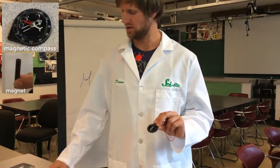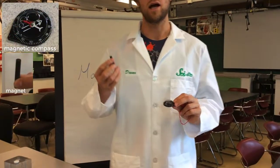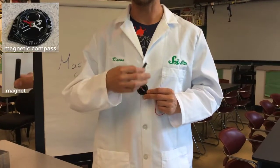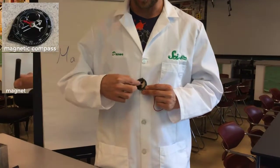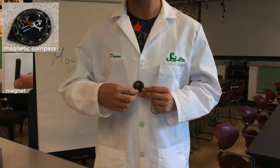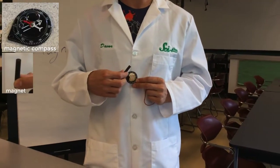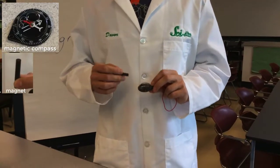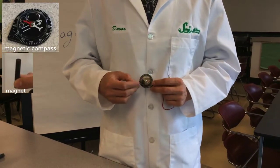Now over here I have a compass and over here I have a magnet. As many of you might know, when we bring a magnet close to a compass it changes the direction of the compass. That's why if we have magnets close to a compass we can't actually tell which direction we're going because they mess with the compass. Why is that? Why does the compass change directions?